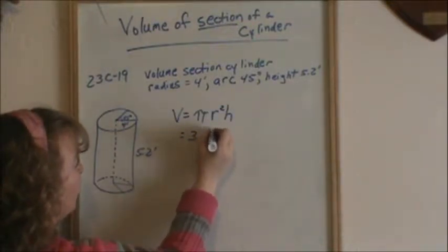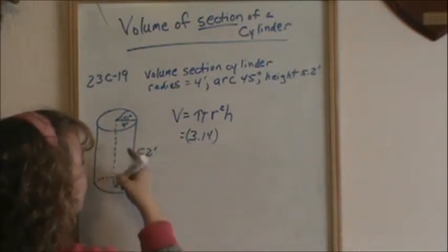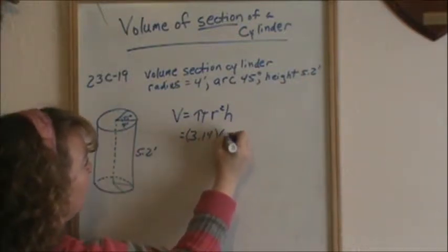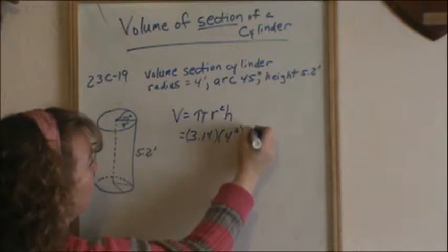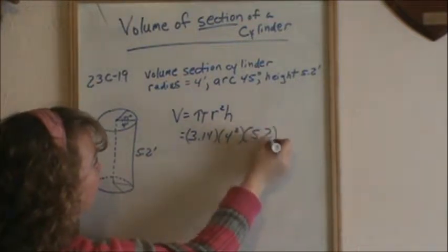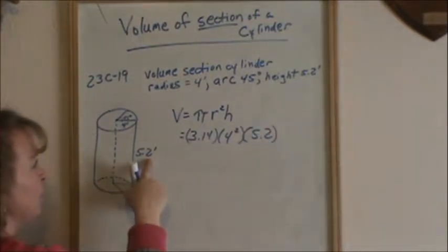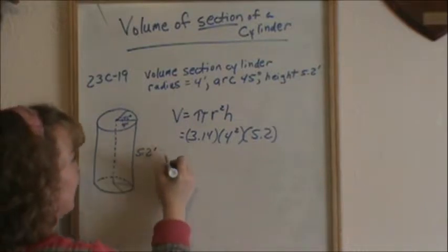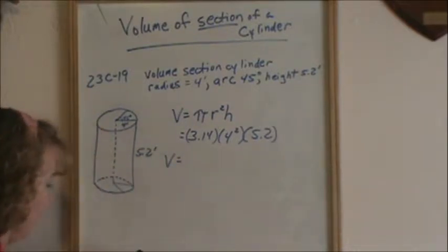So 3.14 r squared is 4 feet. So 4 squared times our height, everything is in the same units, 5.2 feet, 4 feet, so we're good. So the volume of that, squaring your 4 first.